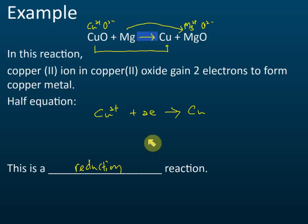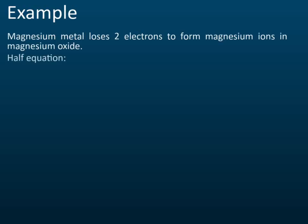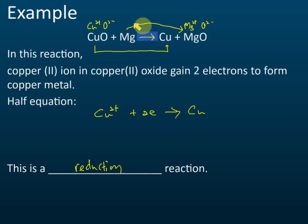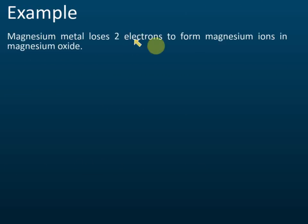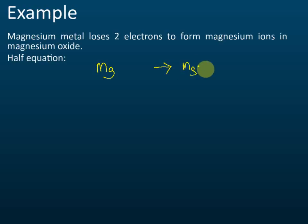For most students it's very hard to see the electron transfer — for example, to see that copper ions receive two electrons from magnesium. Now for the same reaction, magnesium loses electrons: magnesium metal becomes magnesium ions, so magnesium loses two electrons to form magnesium ions in the magnesium oxide. The half equation is written with magnesium before the reaction and magnesium ions after. If a substance loses electrons, we write minus electrons.